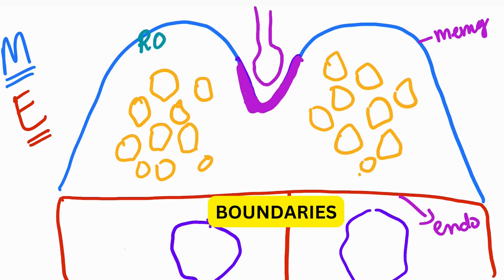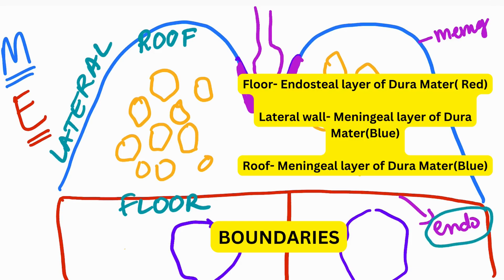So if this is the roof and this is the lateral wall and this is the floor, what do we see here? We see that the floor is made of the endosteal layer of dura mater. The roof and the lateral wall is made of the meningeal layer of dura mater. So boundaries, we got that much covered.